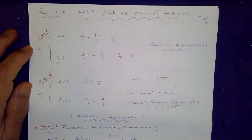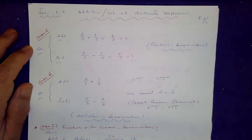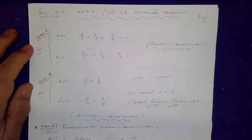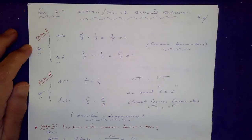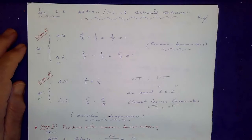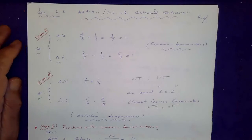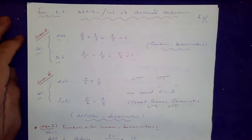Section 6.2: addition and subtraction of rational functions. Now that we have seen how to reduce these so-called algebraic fractions, and we have also seen how to multiply and divide them, in this section we'll see how to add and subtract them.